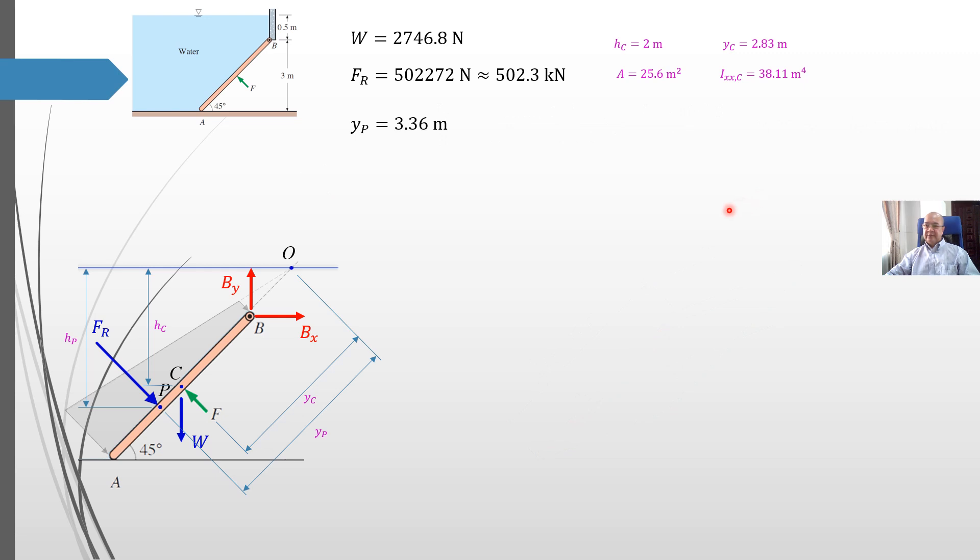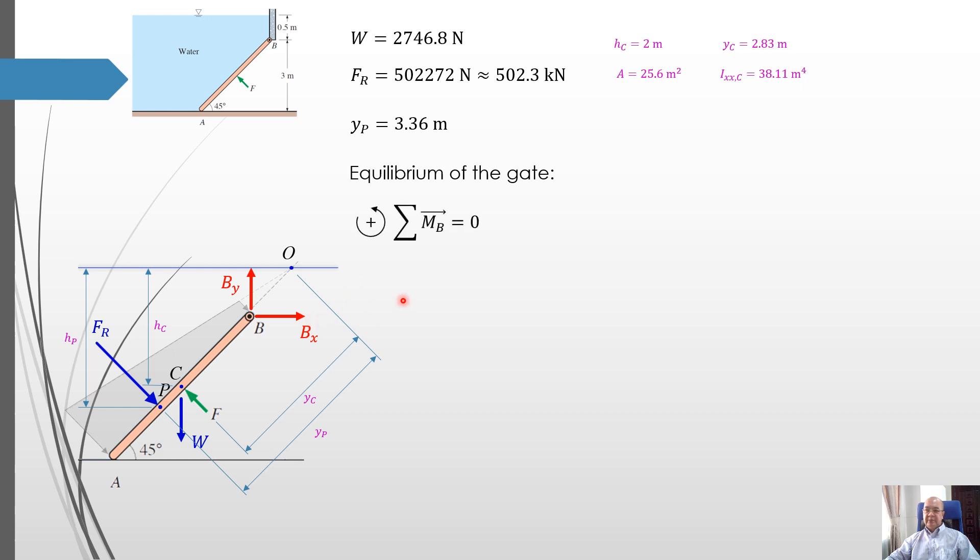Now, the final part of the calculation is to calculate F. We apply the equilibrium of the gate. Only one equation that we are going to use, which is the equilibrium of moment. And we choose point B. Because if we choose point B, we can eliminate the necessity to calculate Bx and By, since the distance from B to these two forces is 0. So we have the sum of all moment about point B equal to 0. Here, we choose the convention positive for anti-clockwise.